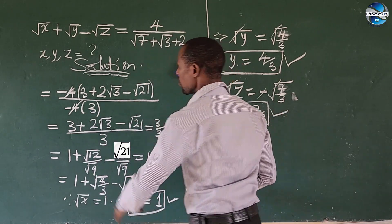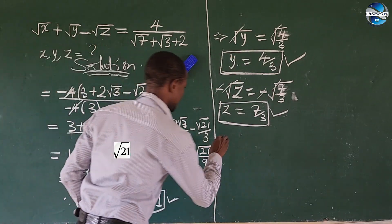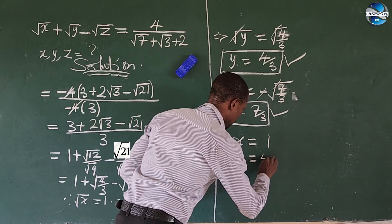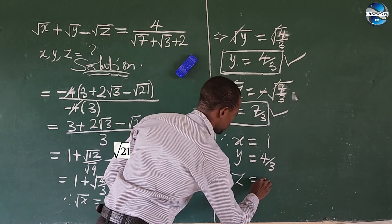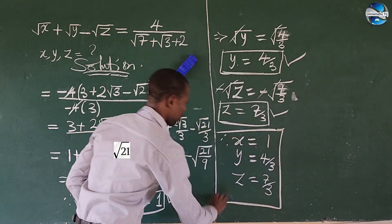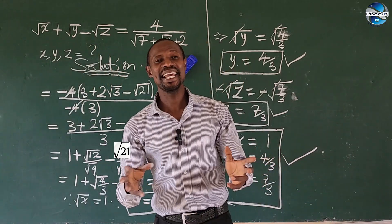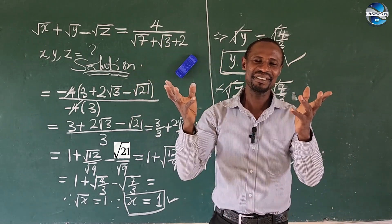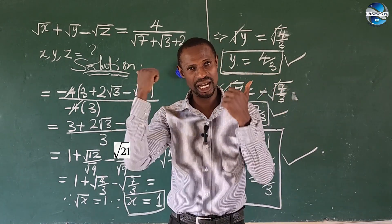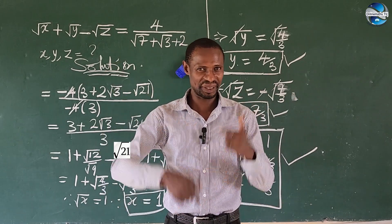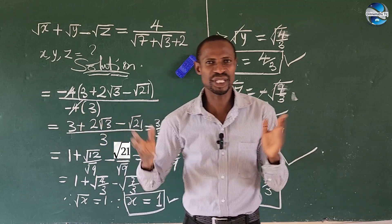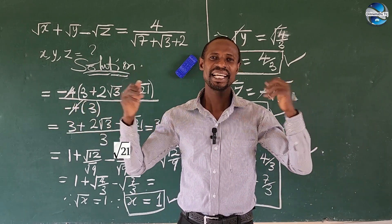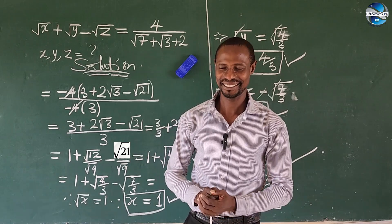So we've succeeded in finding all three variables. Therefore: x is equal to 1, y is equal to 4 over 3, and z is equal to 7 over 3. This marks the end of this wonderful challenge. Many looking at it may think it's simple, but it's not as easy as you may think. If you learned something from this video tutorial, give it a thumbs up and drop a comment below. It could be thanks, well done, or a better way of solving the challenge. Remember, Jake loves you and all of us at Online Math TV love you. Bye!